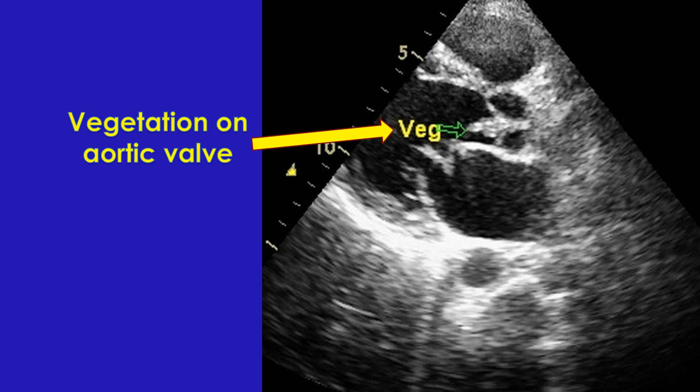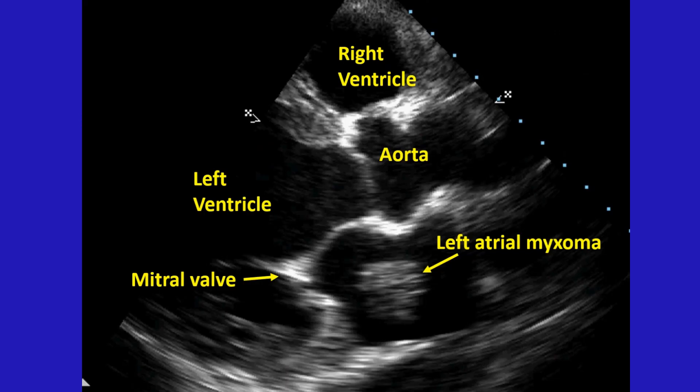Infective material attached to valves are called vegetations. Here is a vegetation on the aortic valve in a case of aortic valve endocarditis. Occasionally, tumours may be noted in the cardiac chambers. A left atrial myxoma, which is the commonest cardiac tumour in adults, is shown here.